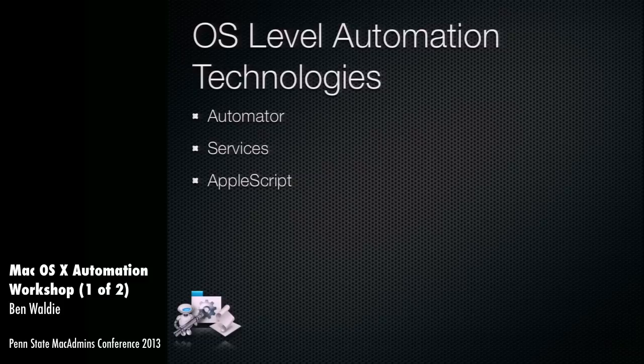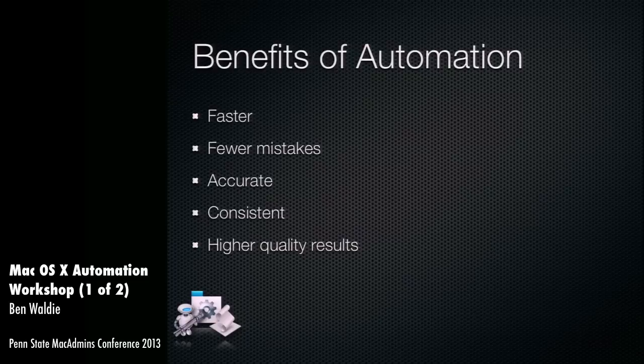Let's talk about the benefits of automation. First of all, a script or a workflow can do things way faster than a person can do them, and it can make fewer mistakes. If you write your script or build your workflow correctly, it's going to do the same thing every time you run it. You won't have to worry about clicking the wrong thing or typing the name wrong. It can allow you to get more consistent and accurate results.